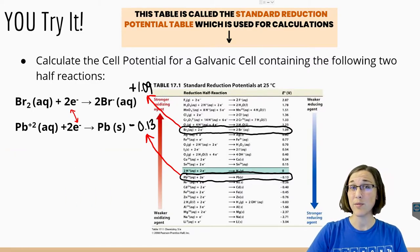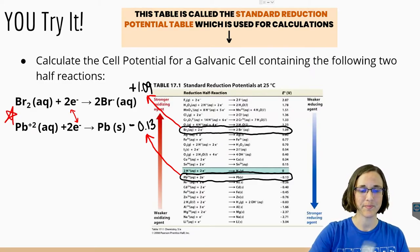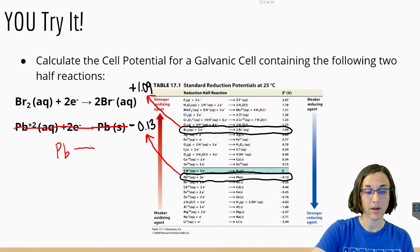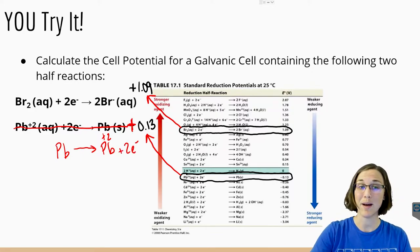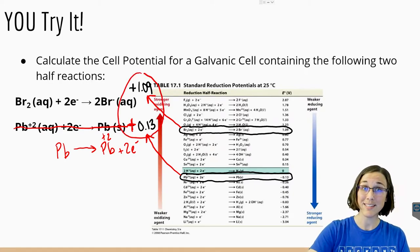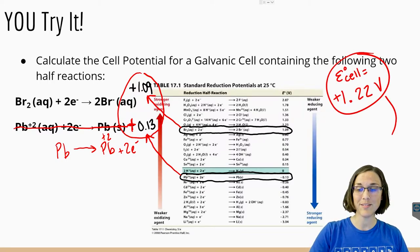The only equation we can flip that would still give us a positive overall answer when adding the voltages together would be the lead equation. So let's rewrite the lead equation flipped around: Pb solid goes to Pb²⁺ plus 2 electrons. And that also flips this sign from negative to positive. So now what ends up happening is 1.09 plus 0.13 gives us a final value of plus 1.22 volts for our final cell potential.